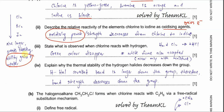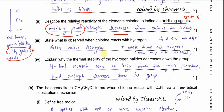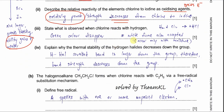You don't need to explain the reasoning in this part — you just need to mention the relative reactivity as an oxidizing agent: oxidizing power decreases down the group. For Part 3: State what is observed when chlorine reacts with hydrogen.